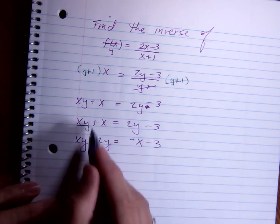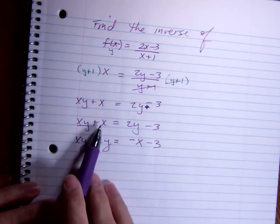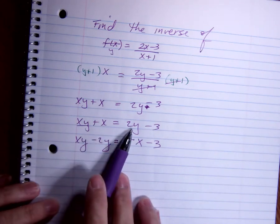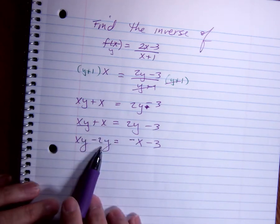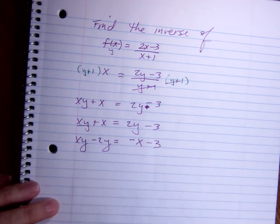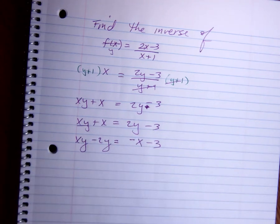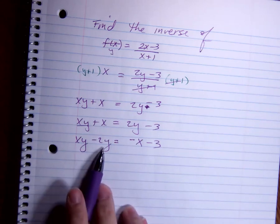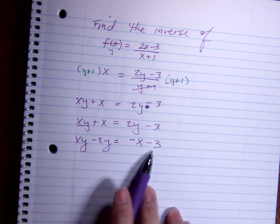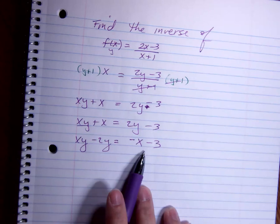Let's look at that. My xy stayed where it was. This x moved to the other side. This 2y came over to this side, and the -3 stayed. My goal was to rearrange it so that I have all my y's on one side and everything that doesn't have a y on the other side.